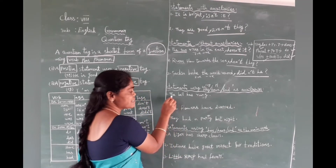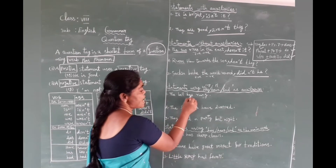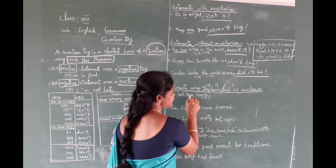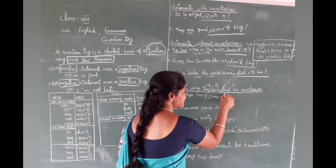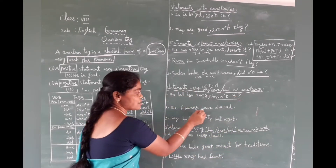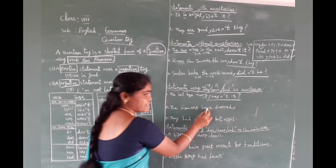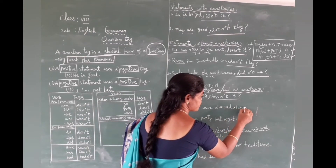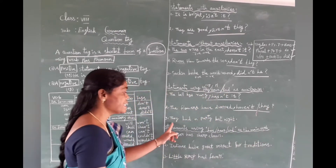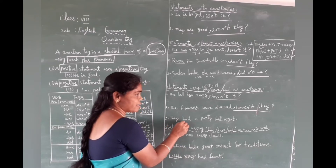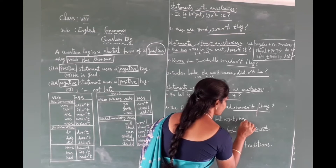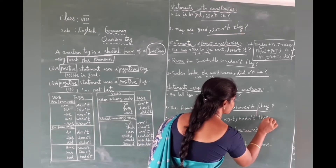Example: 'The bell has rung.' The given statement is positive. The auxiliary is 'has', so the negative tag is 'hasn't'. The subject pronoun is 'it'. Tag: 'hasn't it?' Next: 'The flowers have bloomed.' Positive statement, plural subject. Tag: 'haven't they?' Next: 'They had a party last night.' Positive statement, auxiliary 'had'. Tag: 'hadn't they?'